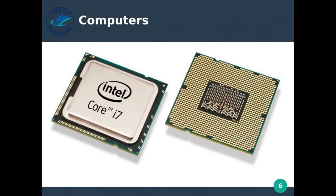So this is a CPU. CPUs are really complicated and super interesting, but we're not going to get too much into them. Basically, CPUs have extremely tiny capacitors inside, and the more capacitors you can fit inside a CPU, the faster and better it works. A CPU's whole job is to process — you can think of it like a very simple calculator.